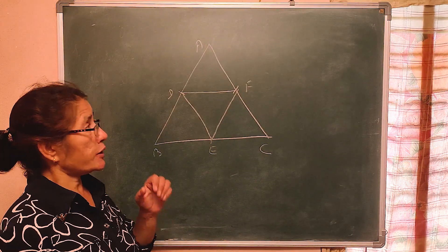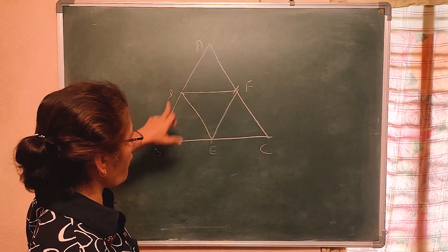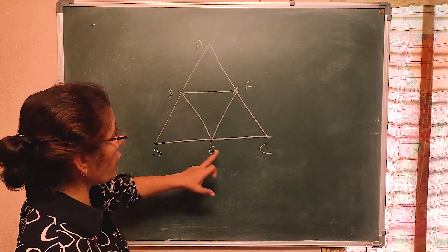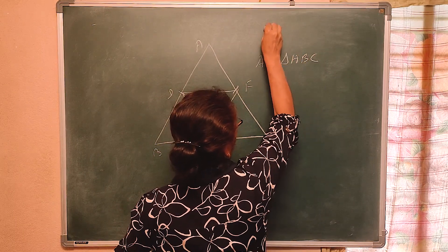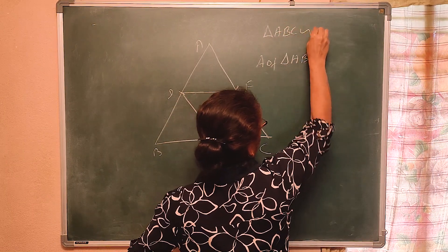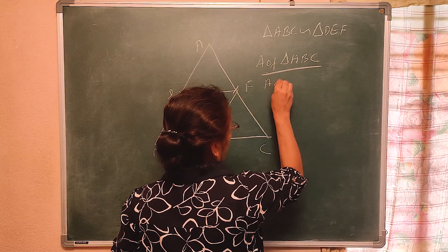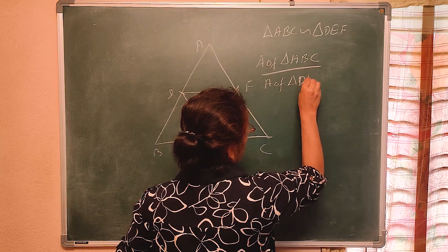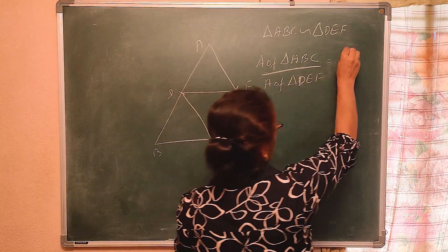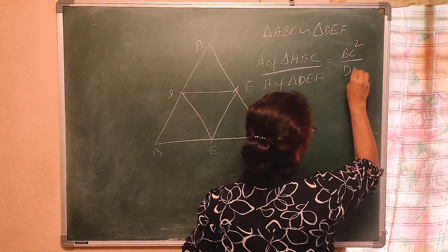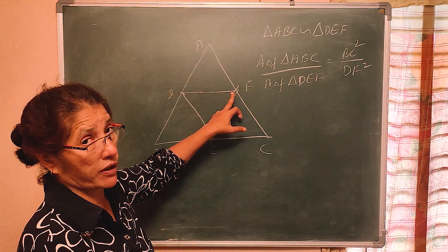To compare the triangles, I can take any one pair of corresponding sides. I say: area of triangle ABC divided by area of triangle DEF is equal to BC squared by DF squared. Why BC squared by DF squared? Because DF corresponds to BC as the relevant pair of corresponding sides.